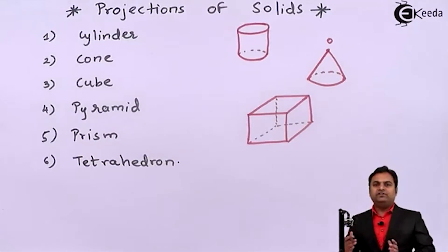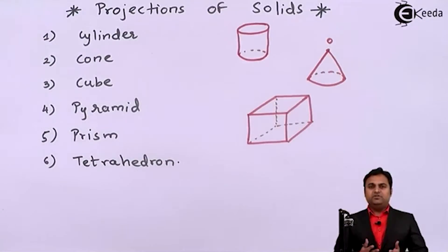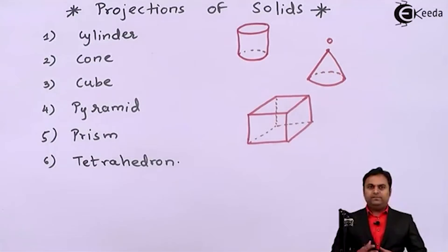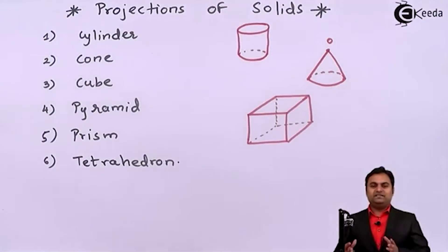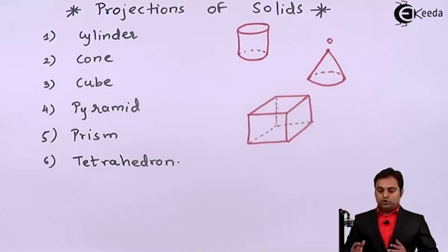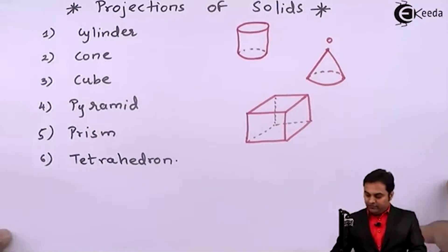Pyramids are of different shapes and they are defined based upon their number of edges of the base. Like there may be square pyramid having 4 edges at the base. Then there will be pentagonal pyramid having 5 base edges. Then hexagonal pyramid having 6 base edges and after that there is even octagonal pyramid having 8 base edges. So a pyramid is defined based on the shape of its base.